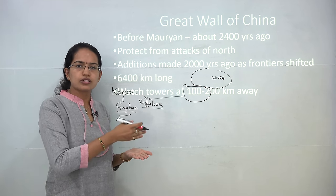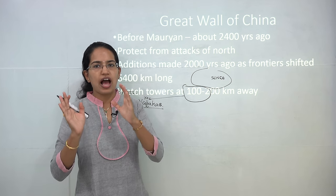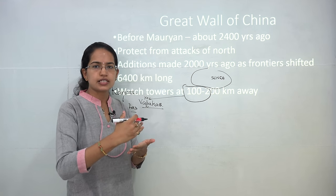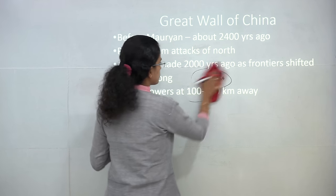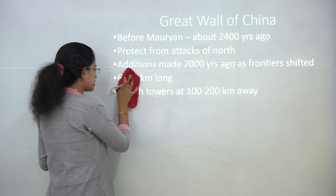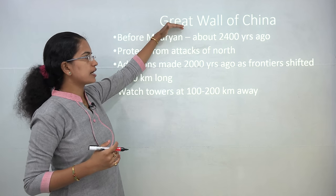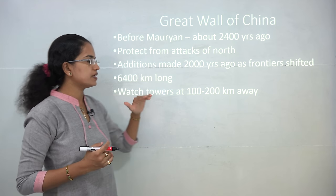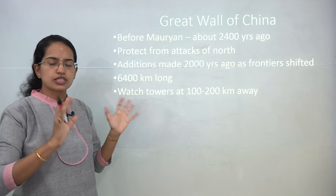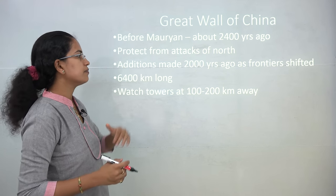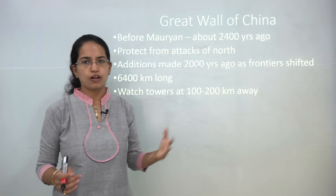Before the Mauryan dynasty, a similar significant event occurred in the world — the building of the Great Wall of China, nearly 2,400 years ago. Contrary to Ashoka's approach, China was trying to protect itself from Mongol attacks from the north. They built the Great Wall, which is nearly 6,400 kilometers long with watchtowers at every 100 to 200 kilometers. It took nearly 2,000 years for the various boundaries of the Great Wall to shift as different empires came into power.